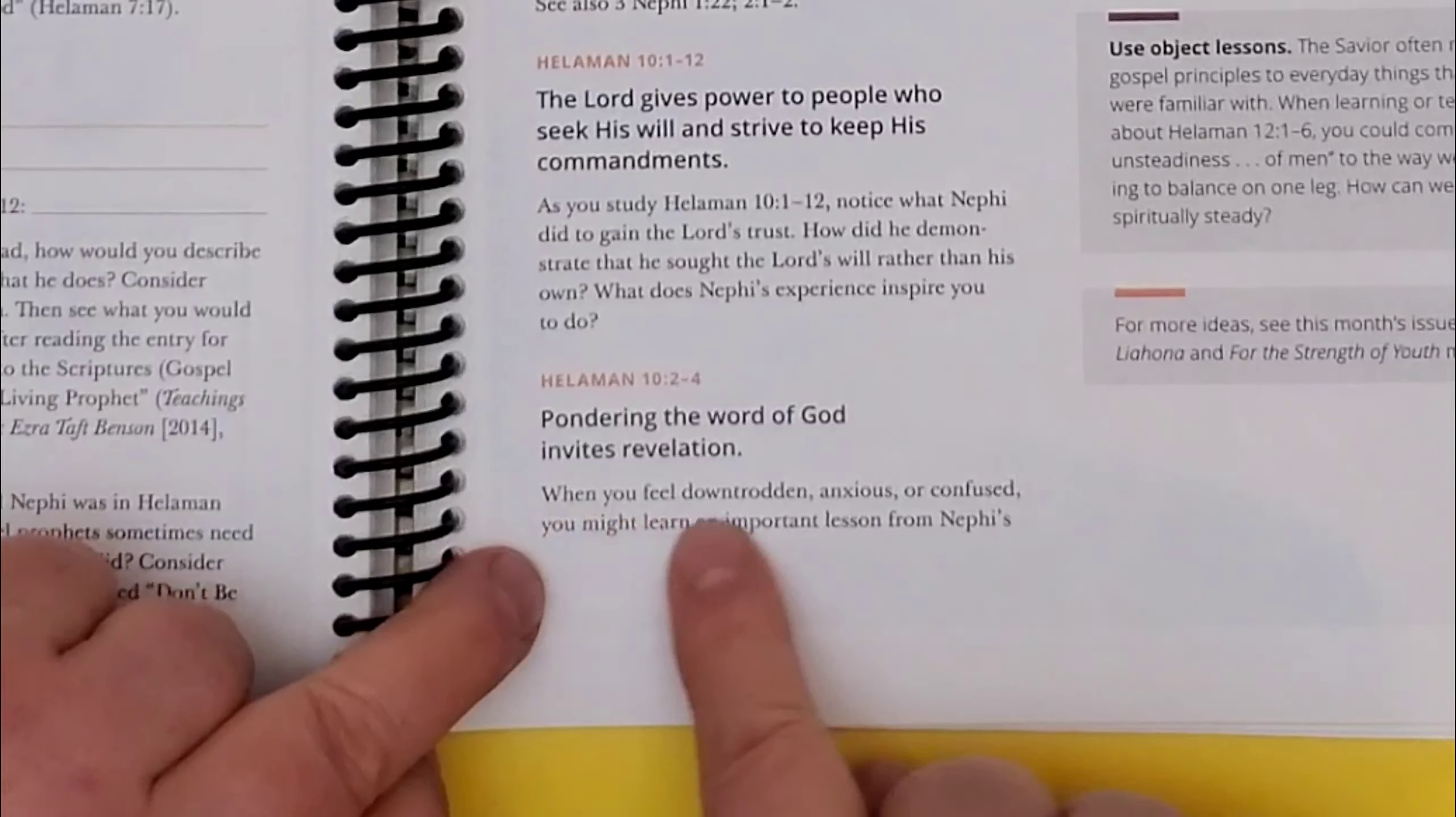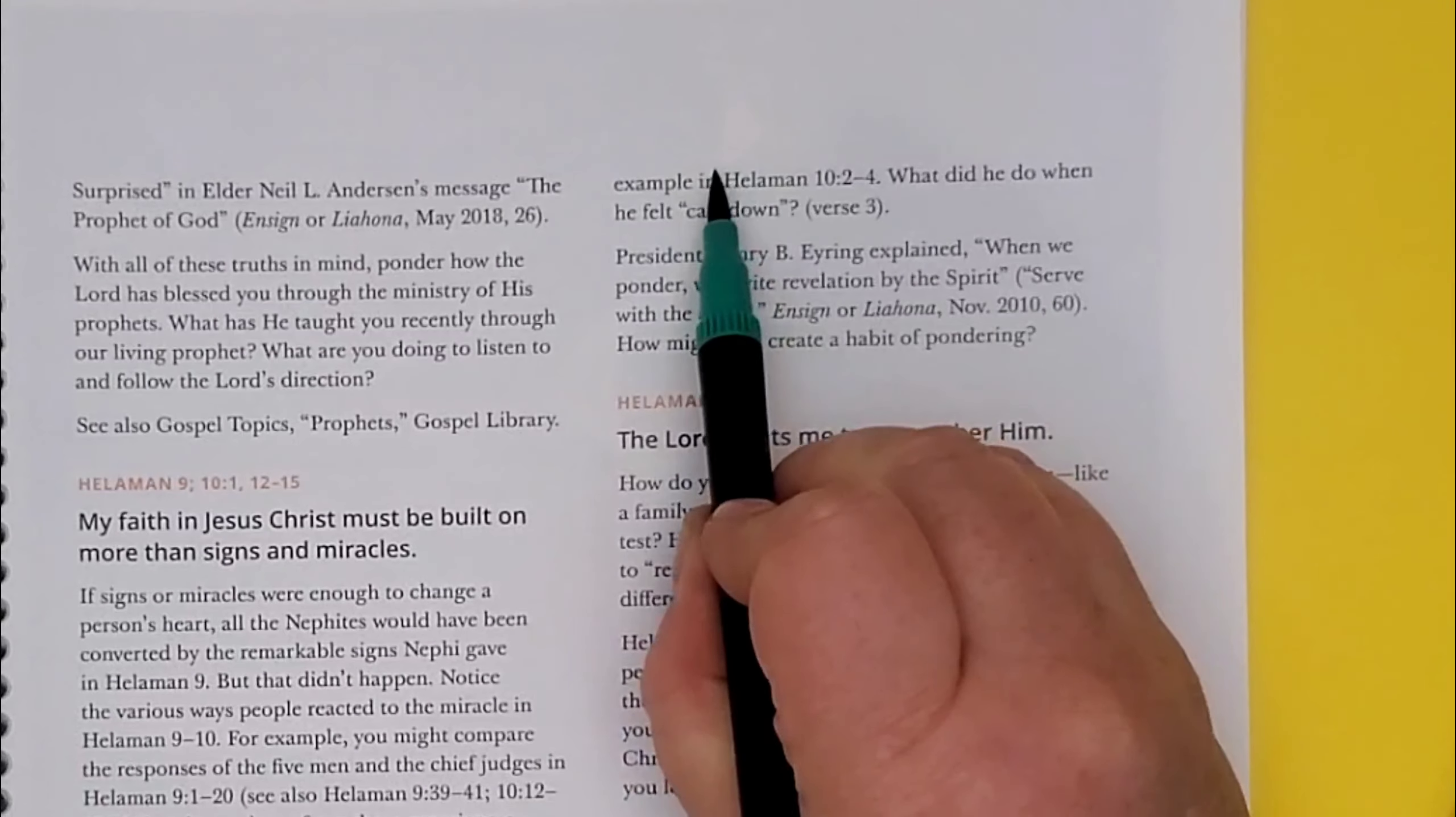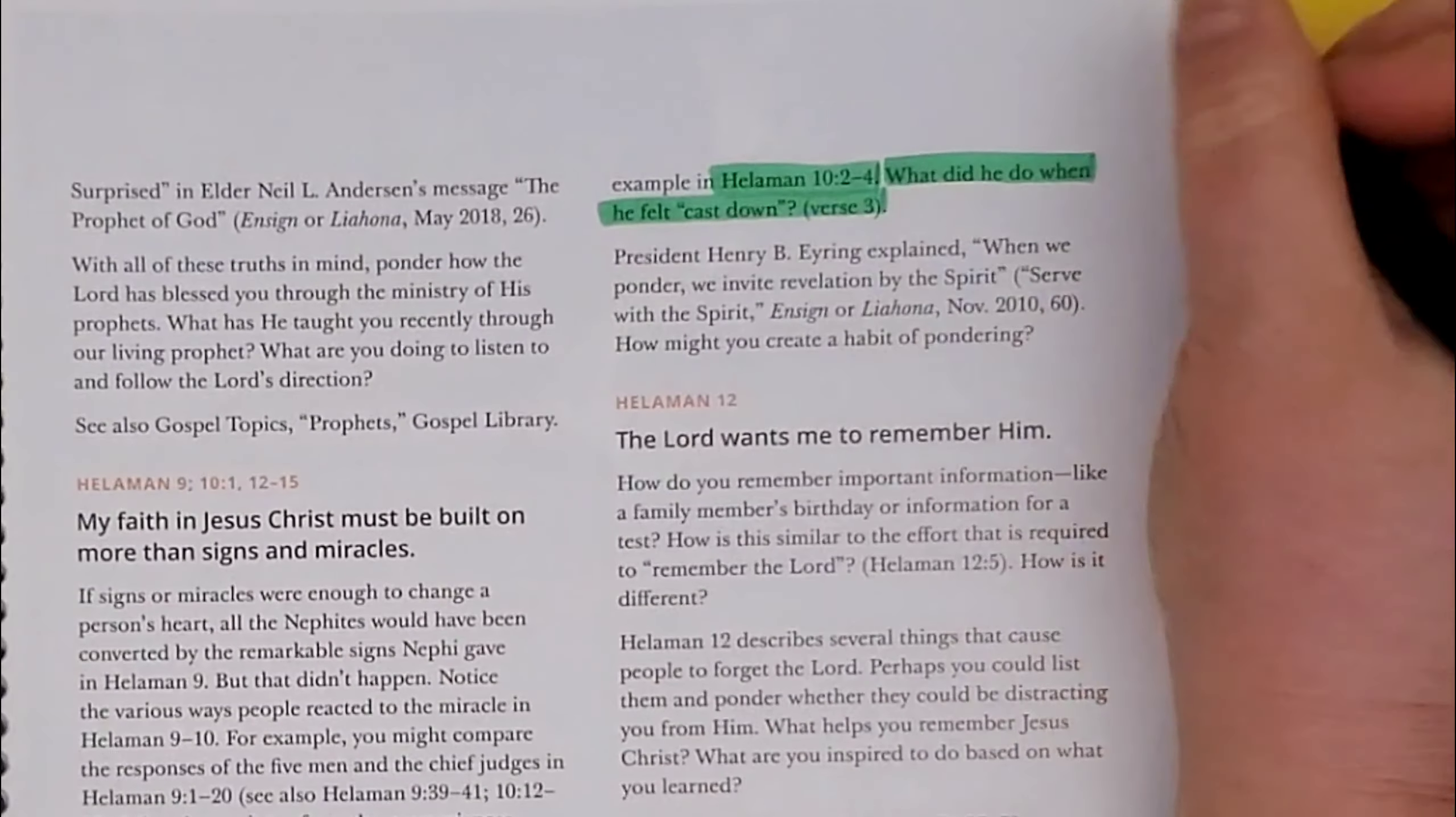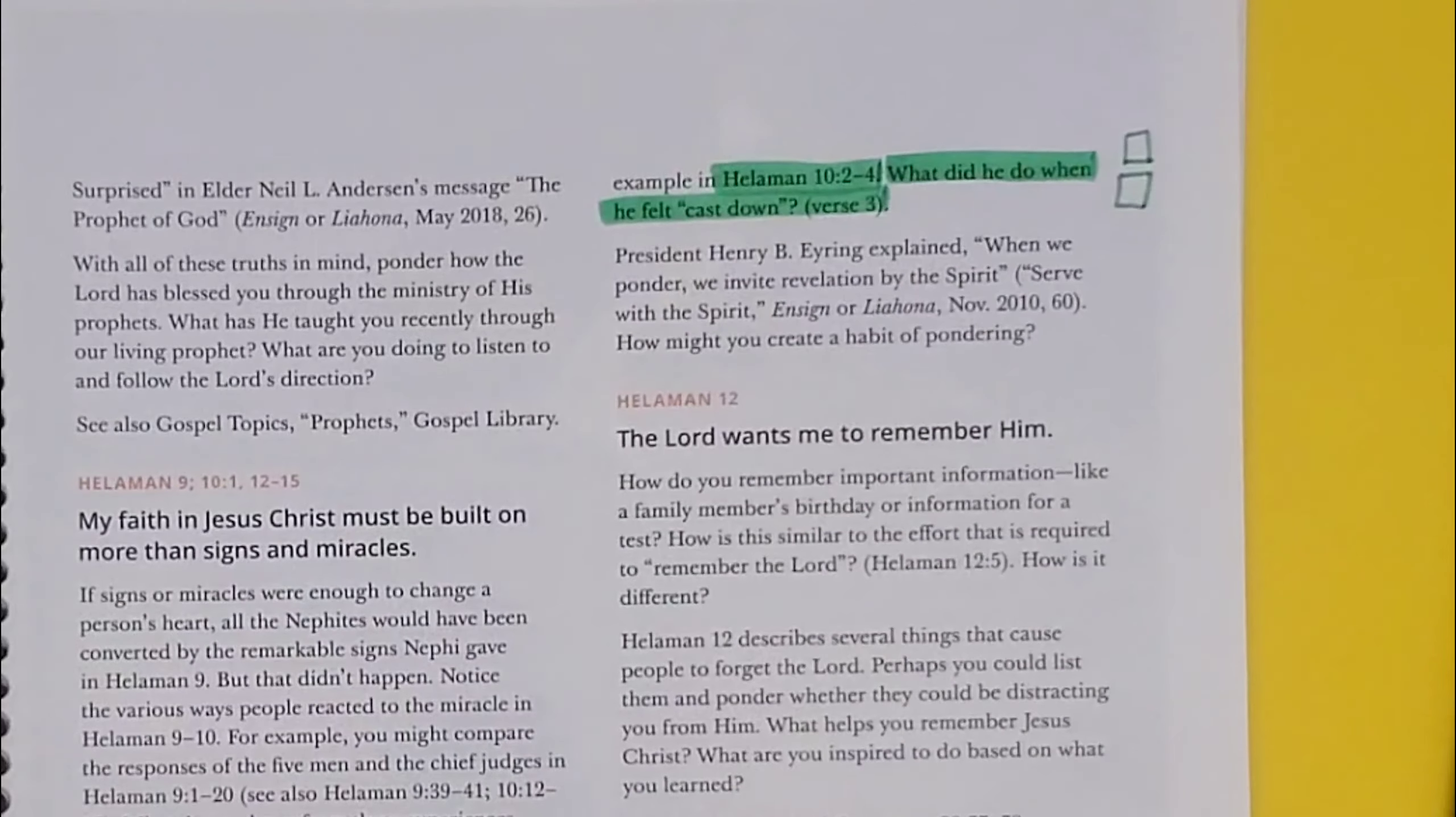When you feel downtrodden, anxious, or confused, you might learn an important lesson from Nephi's example in Helaman 10, 2-4. What did he do when he felt cast down in verse 3? Those are two little questions. Sorry, two little sections. So first I'm going to do the reading and then I'm going to answer the question.